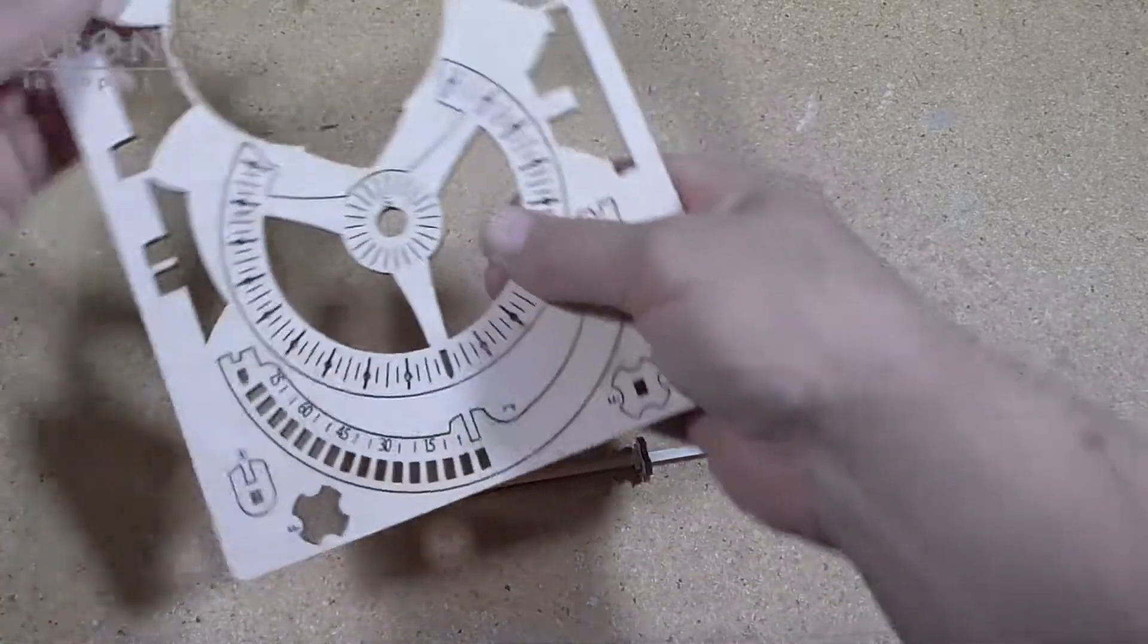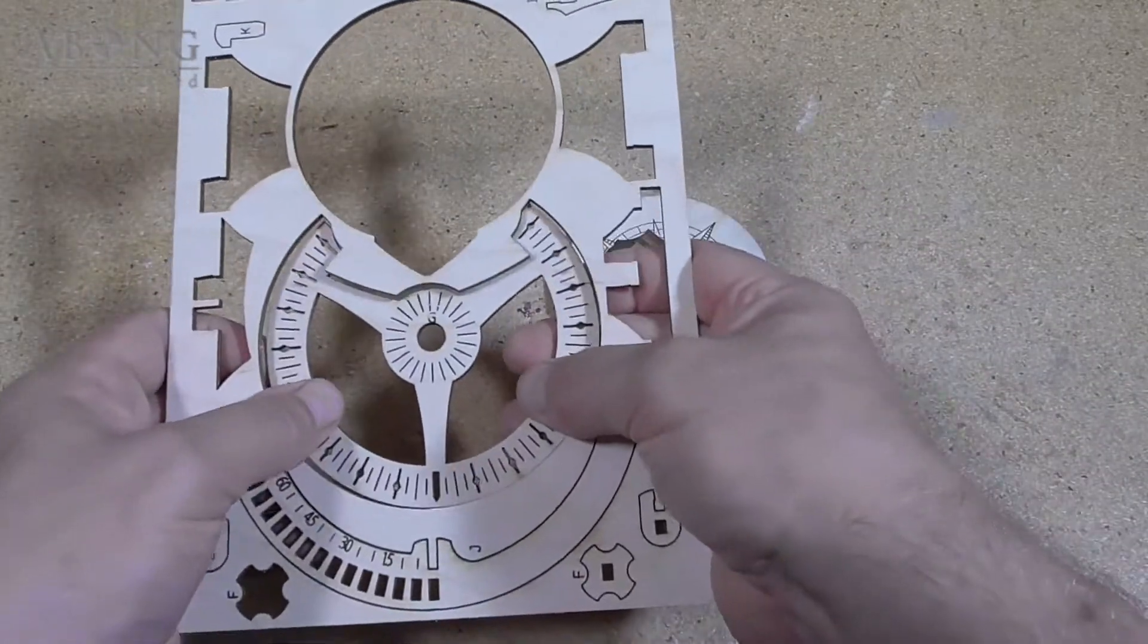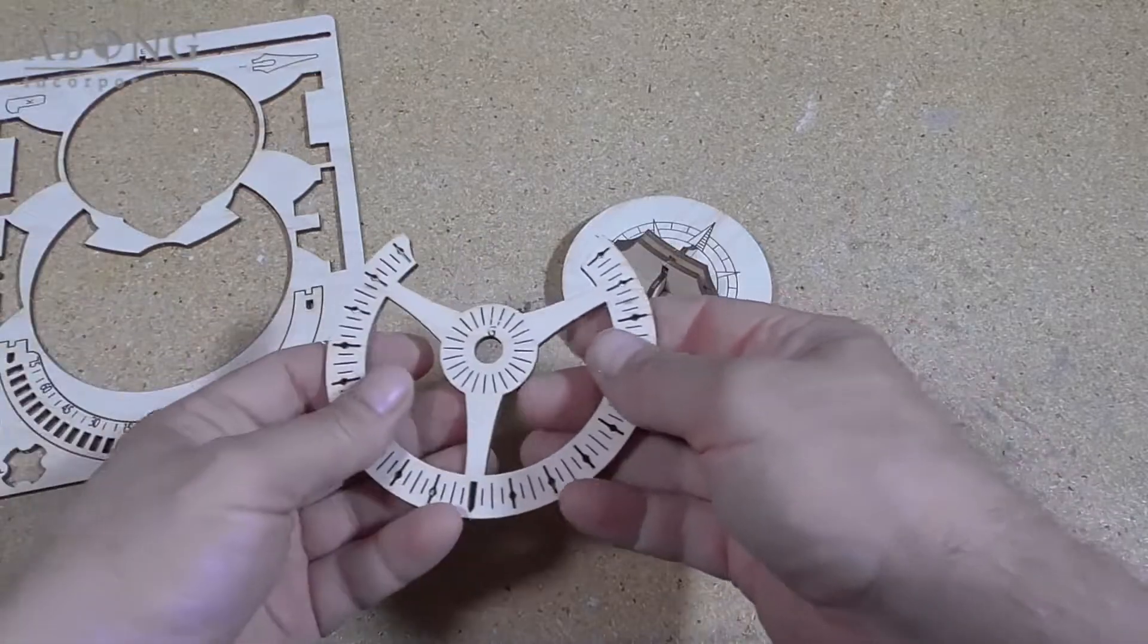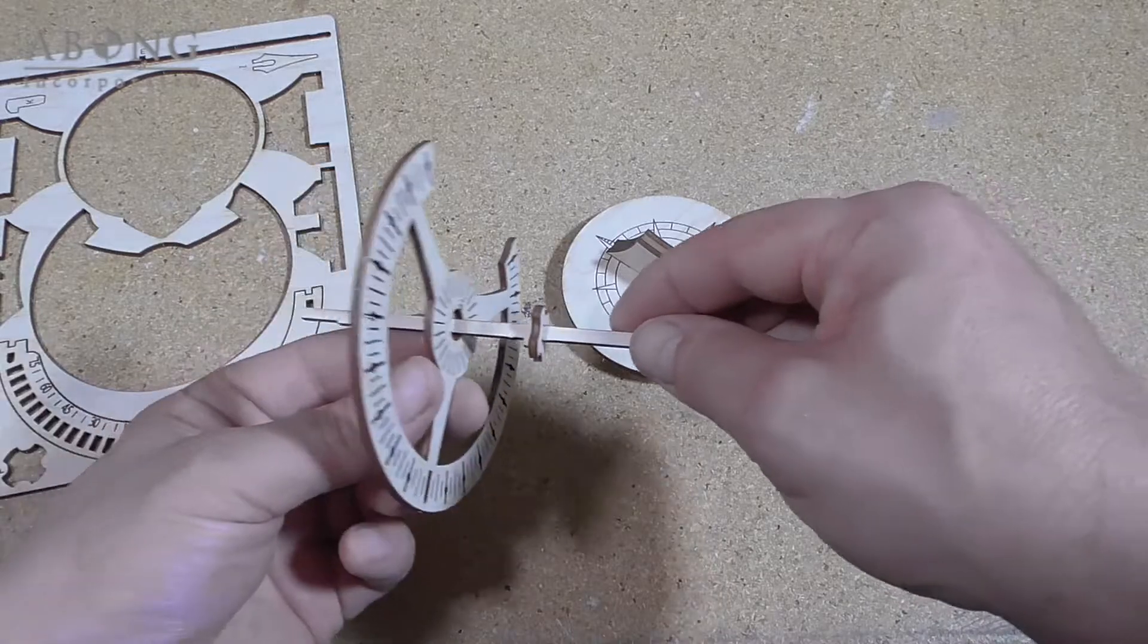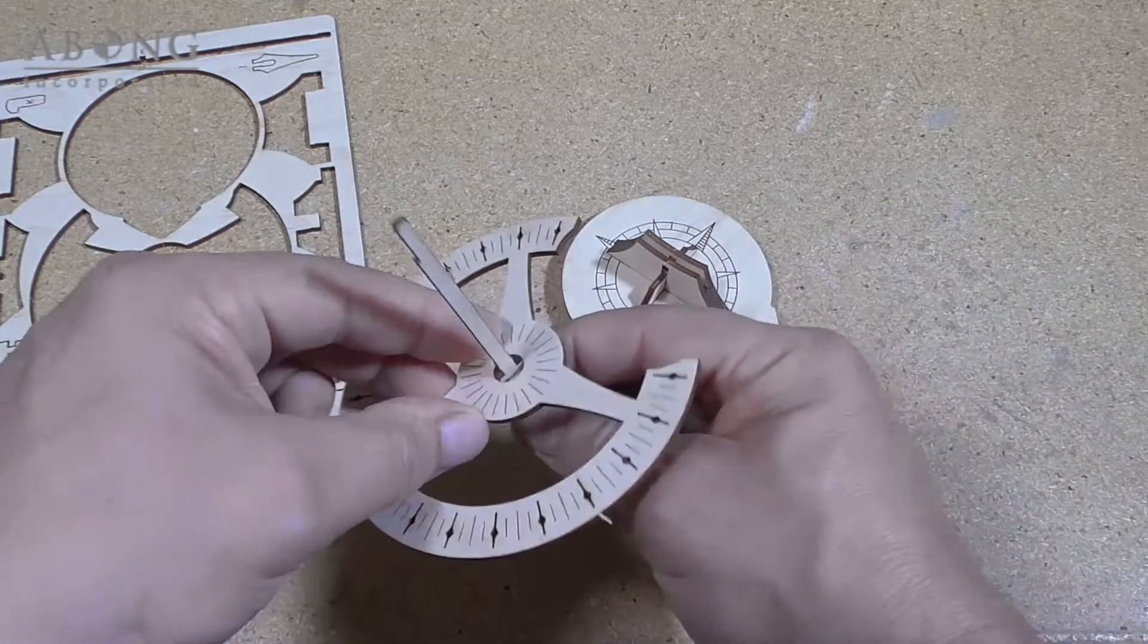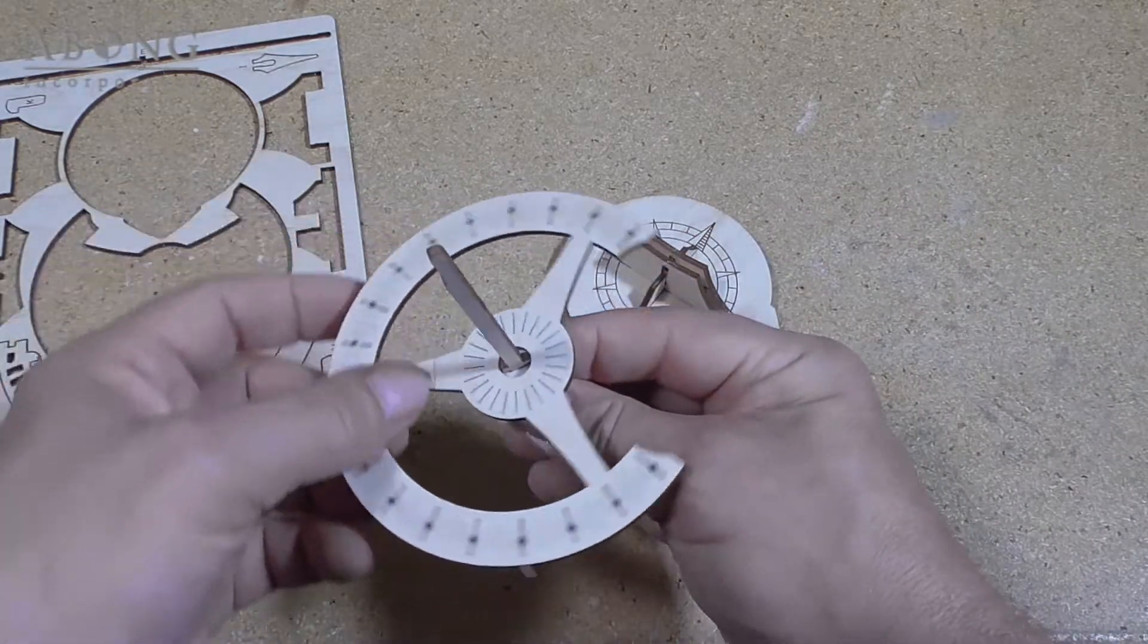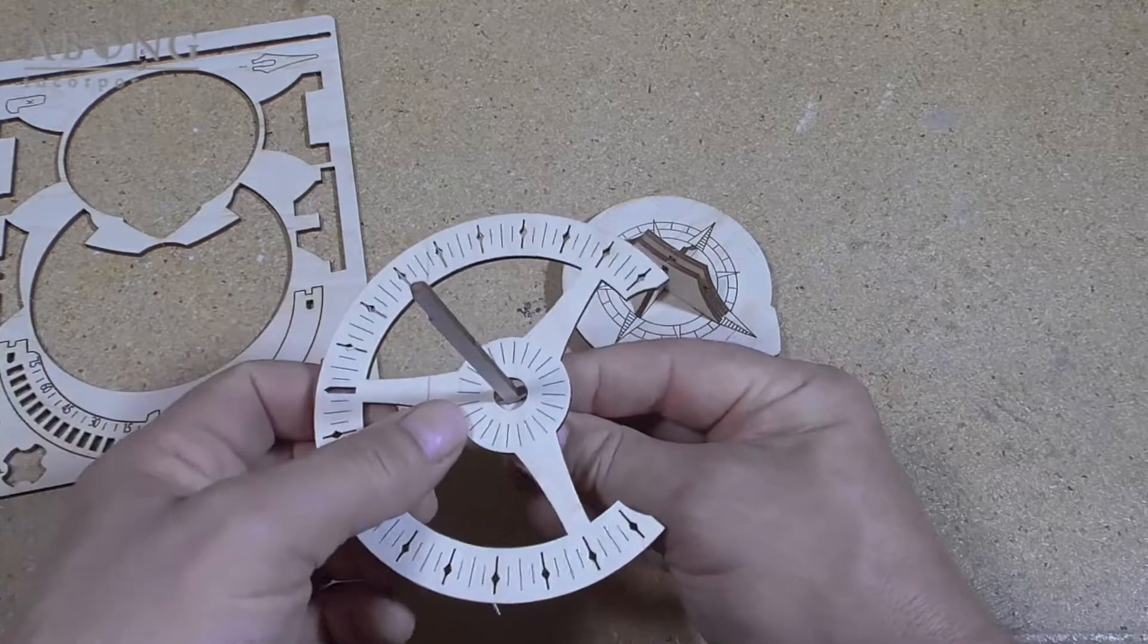Now we're going to get the dial. And again it doesn't matter which way the dial goes. It's marked on both sides. And the dial goes right over the notch. So the dial can actually turn to set the current time.